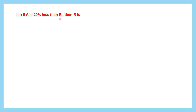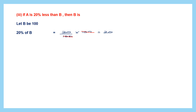Question 3: if A is 20% less than B, then B is what percentage more than A? Let B = 100. Since A is 20% less than B, we first calculate 20% of B: 20/100 × 100 = 20. We'll use the formula: difference between A and B divided by the original value, multiplied by 100%.